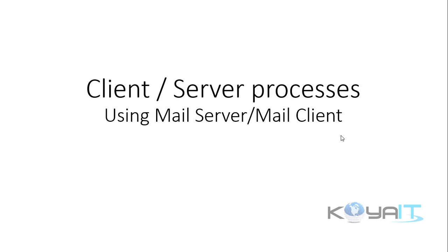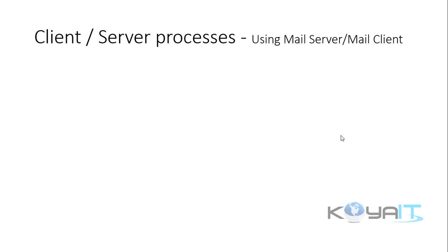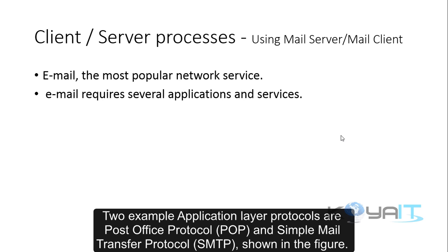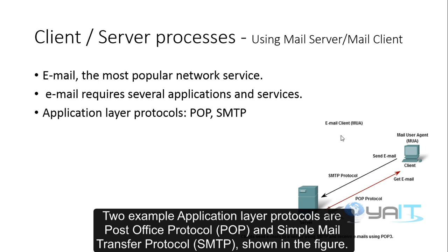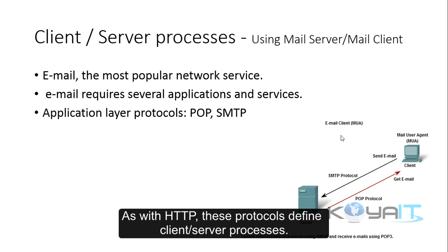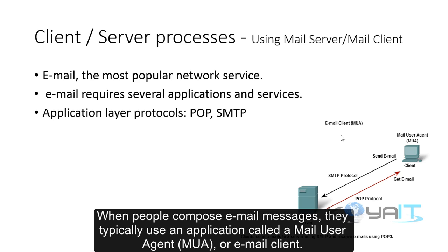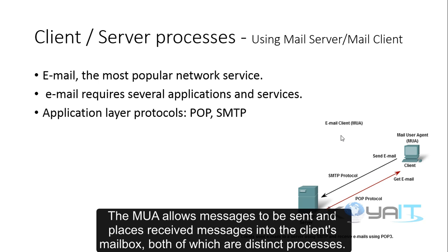Client-server processes using mail server and mail client. Email is the most popular network service and requires several applications and services. Two example application layer protocols are Post Office Protocol (POP) and Simple Mail Transfer Protocol (SMTP). As with HTTP, these protocols define client and server processes. When people compose email messages, they typically use an application called a Mail User Agent (MUA) or email client, which allows messages to be sent and places received messages into the client's mailbox.